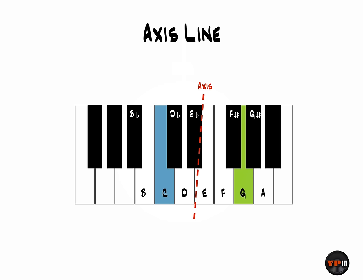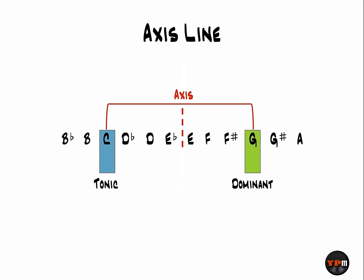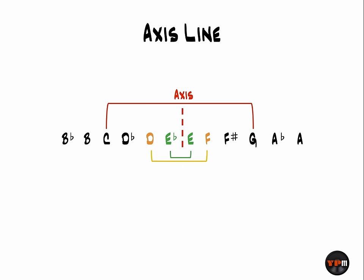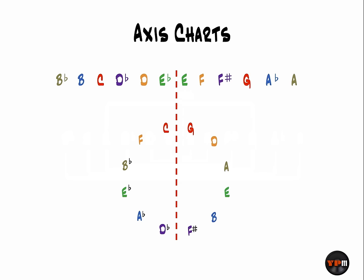Another way to view positive-negative note pairings is to list all 12 notes while making the middle of that list the axis. Here's the axis in the key of C — there's the tonic and dominant. Pairing notes based on their relation to the axis: E goes to E flat, F goes to D, F sharp to D flat, G to C, A flat to B, and A to B flat.